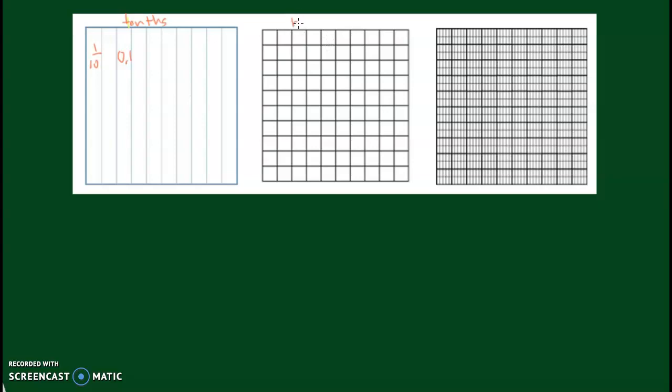This square is the hundredths square. One of these equals one-hundredths, or 0.01. There are one hundred of these small squares in the whole square.